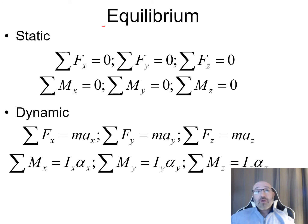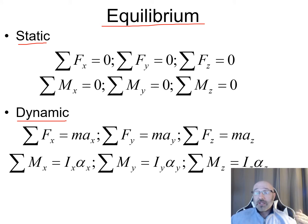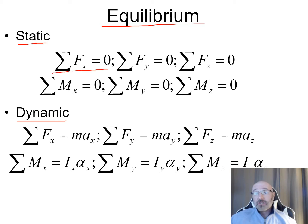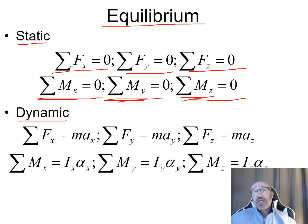Now we move on to equilibrium, discussed in two parts: static or dynamic — are things stationary or in motion? For static equilibrium, we draw our free body diagram, identify all external forces and moments, choose a coordinate system (X, Y, Z), then set summation of forces in X, Y, and Z each to zero. We do the same for moments: summation of moments in each direction equals zero. These are our equilibrium equations for non-moving systems.